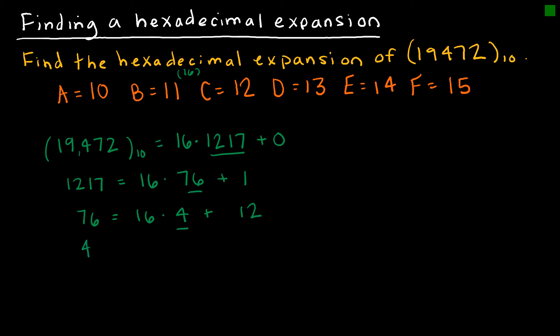Then I'm going to take my 4. Remember, we keep going until we get to a 0. So 4 is the same as 16 times 0 with a remainder of 4.